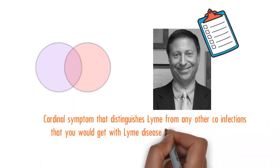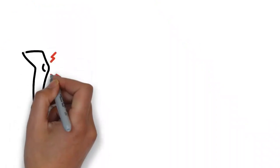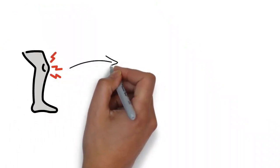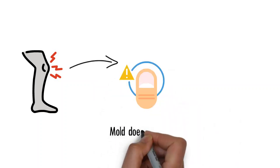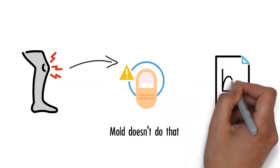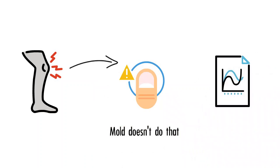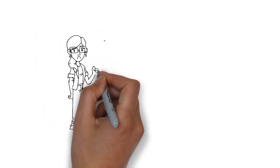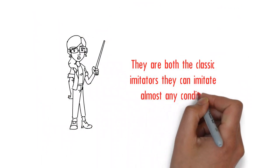That cardinal symptom that you would get with Lyme disease is that there's a migration of your symptom. So an example would be if you had arthritis in your knee and suddenly the knee arthritis got a little bit better but your first finger joint, first joint on your finger, is suddenly swollen up—that's a classic Lyme disease thing. Mold doesn't do that. It doesn't wander around the body. It has a tendency to have ups and downs, so flares and calms that are going to be more related to your exposure than to just these random migrations. Those would be some ways to kind of pull them apart, but they are both the classic imitators. They can imitate almost any condition.